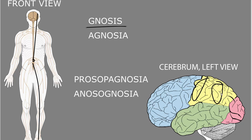Dysfunction of these cortices may cause one or more types of agnosia, which is abnormal gnosis. For example, there is a type of visual agnosia called prosopagnosia, which is an inability to visually recognize familiar faces, despite being able to perceive more basic visual information such as shape or color. Anosagnosia is a term for a common agnosia involving an inability to perceive neurological deficits or loss of neural functions, such as weakness or sensory loss.